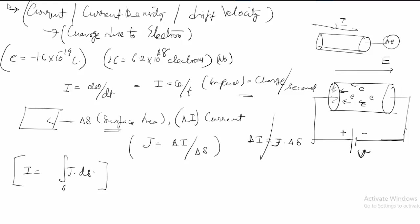As the electron moves, it faces opposition from the positive ions present inside the atom. The electron strikes them, changes its path, and moves again. If you observe over a time period T, the average velocity of the electron during this time period is defined as the drift velocity U.